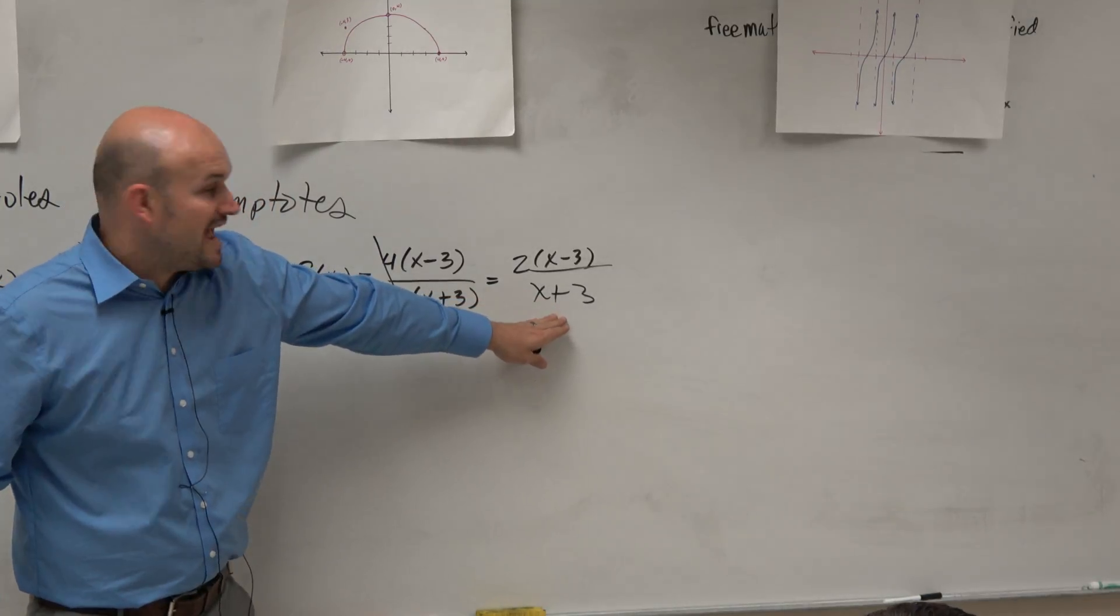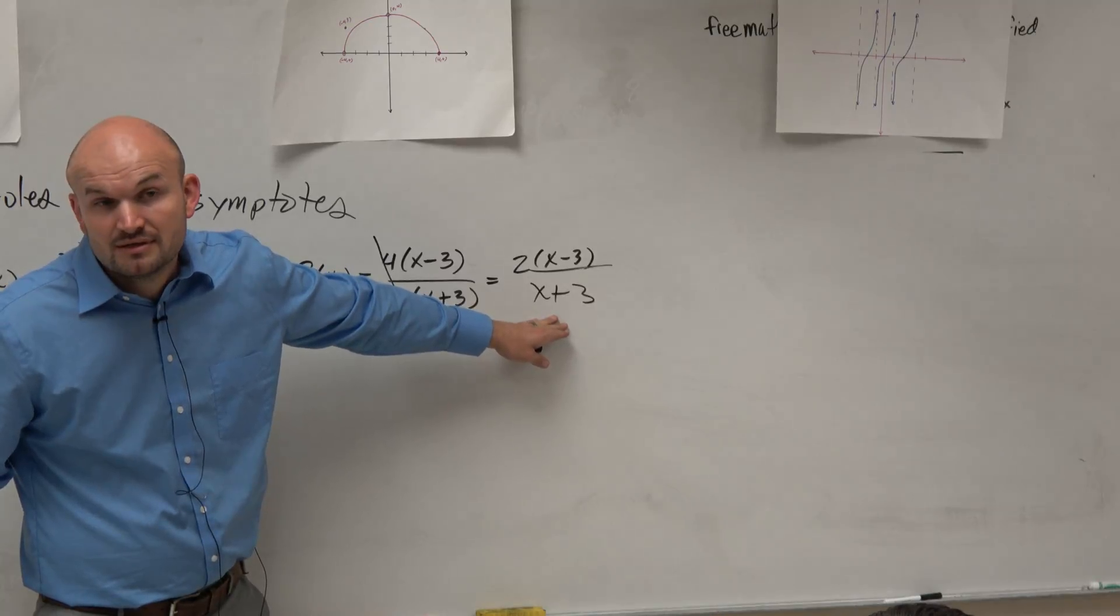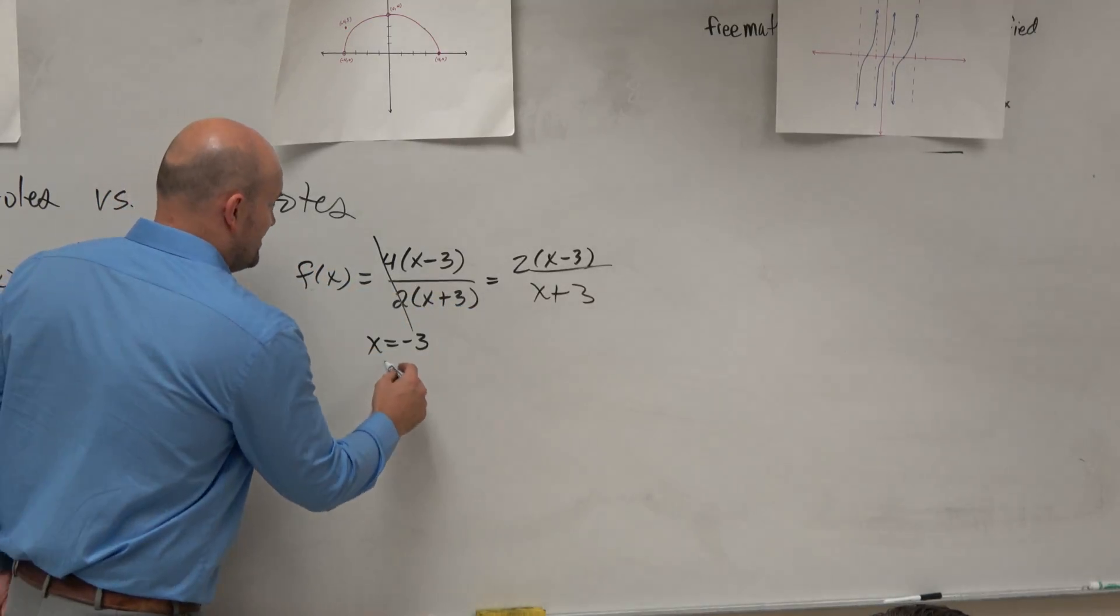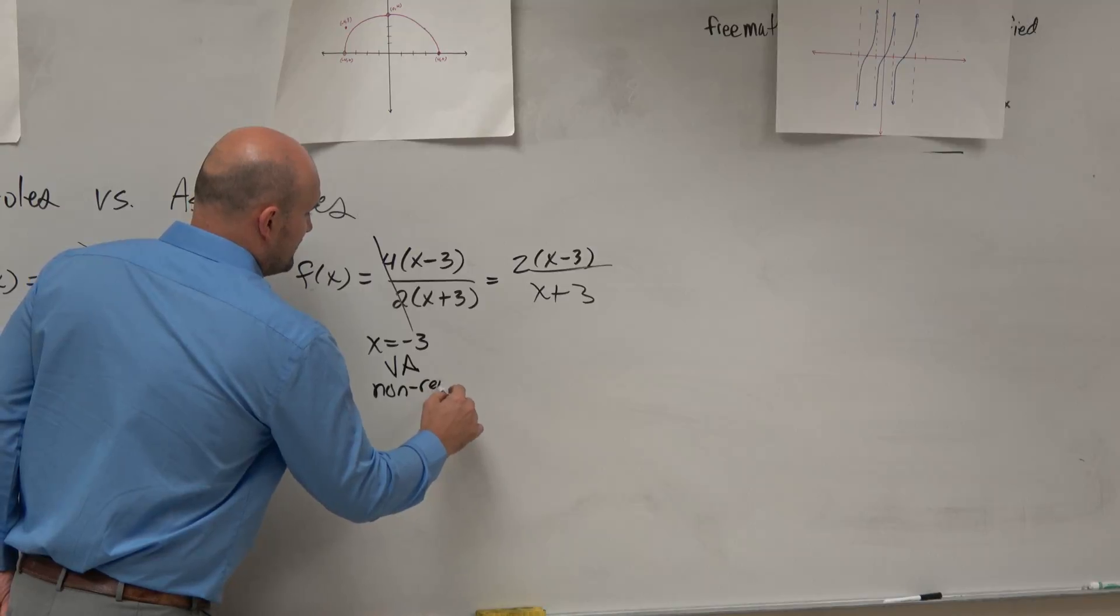Right? So did this discontinuity get removed? No. So that is a vertical asymptote, which is a non-removable.